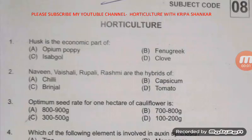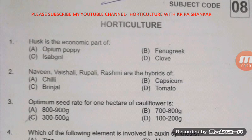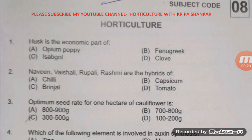Hello friends, welcome back to my YouTube channel Horticulture with Kripashankar. Today I am going to discuss the JRF 2015 Horticulture question paper. The first question is: husk is the economic part of which crop? The right answer is C — Isabgol, which is Plantago ovata, originated in India. An important point: Isabgol is a rich source of mucilage, and the ratio of husk to seed is 1:3, meaning the seed is always 3 times more than the husk.